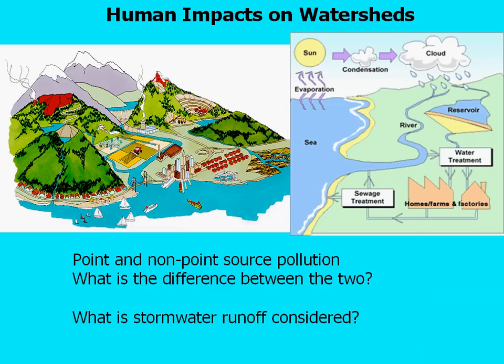Non-point source pollution is harder to track down and harder to pinpoint where it comes from. It comes from those little drops of gasoline that fall out of your car onto the pavement and then enter the watershed after a rainstorm. Non-point source pollution includes construction material or erosion from construction sites entering the watershed through creeks and streams after major rain events. Stormwater runoff is considered non-point source pollution because rain that falls picks up pollutants and carries them into the watershed — you can't necessarily determine exactly where those sources of pollution are coming from.